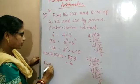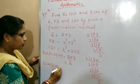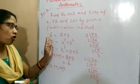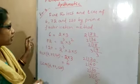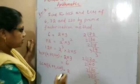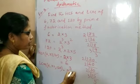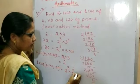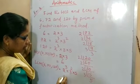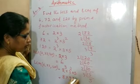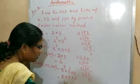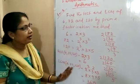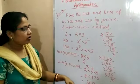Now find LCM of 6, 72 and 120. LCM equals the product of highest powers of all prime factors present in the numbers. The highest power of 2 is 2³. The highest power of 3 is 3². The other factor is 5 with power 1. So LCM = 8 × 9 × 5 = 360.